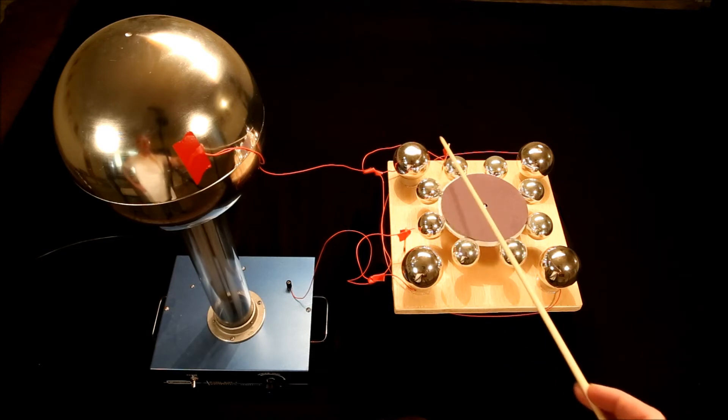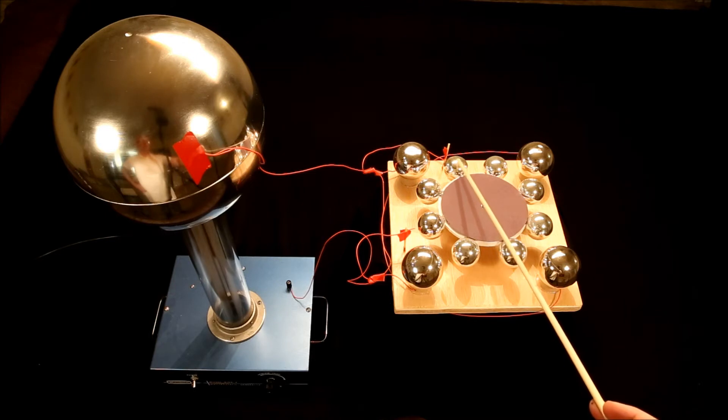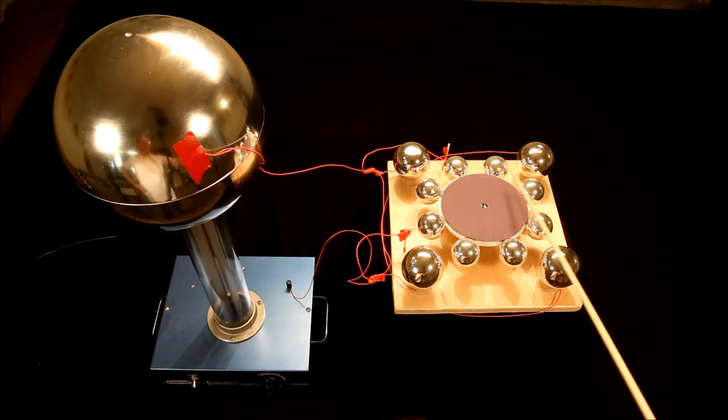Equally so, this and this sphere are charged positively. They repel and it causes the armature to rotate this way.